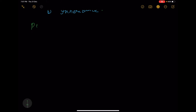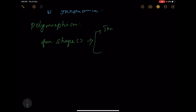First, polymorphism. Polymorphism is nothing but a behavior of one object or method which acts differently based on the context where it's being used. For instance, in simple terms, let's assume that we have a method called 'shape' which gives triangle when it's being used in a triangle context and gives square when it's being used in a square context.